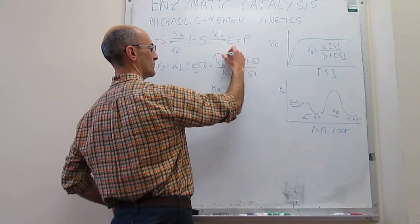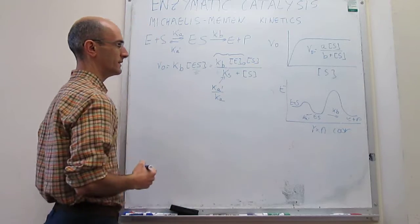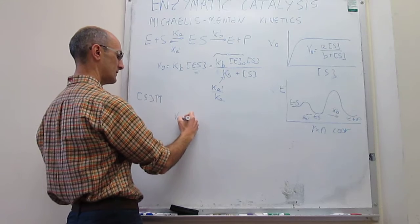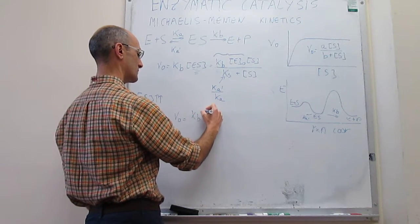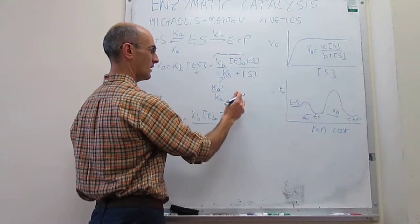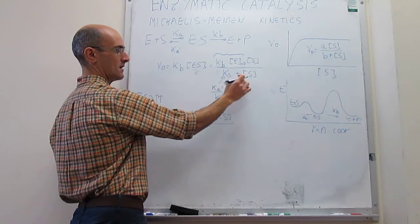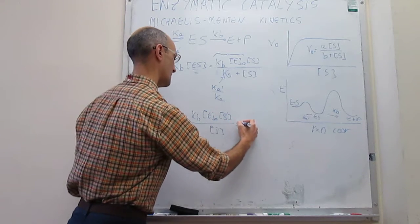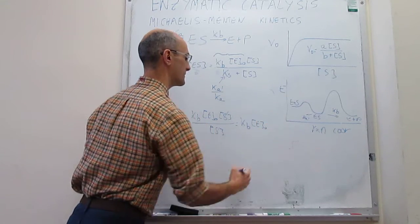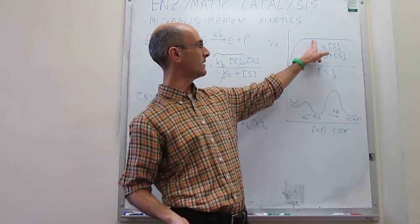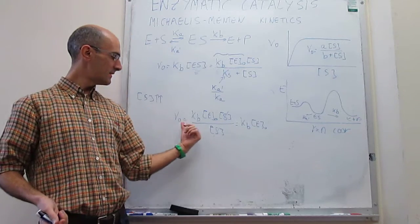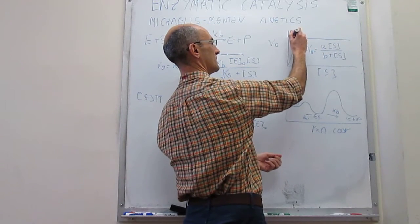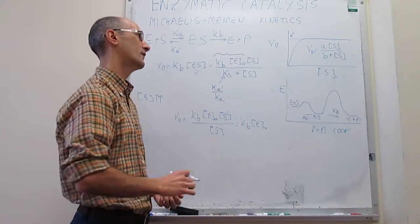The constant K_b multiplied by E_0 has a physical meaning we can find by assuming the concentration of substrate is very high. When [S] is very high, the rate equals K_b times E_0 times [S] divided by (K_S + [S]), and we can neglect K_S in the denominator. Those terms cancel, leaving just K_b times E_0. This is the maximum rate the enzyme-catalyzed reaction can ever have, and we simply call this V_max.